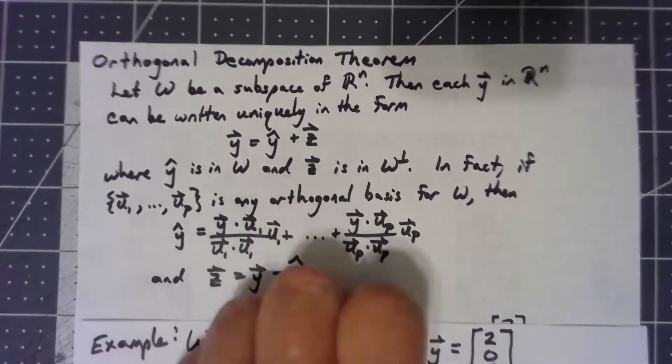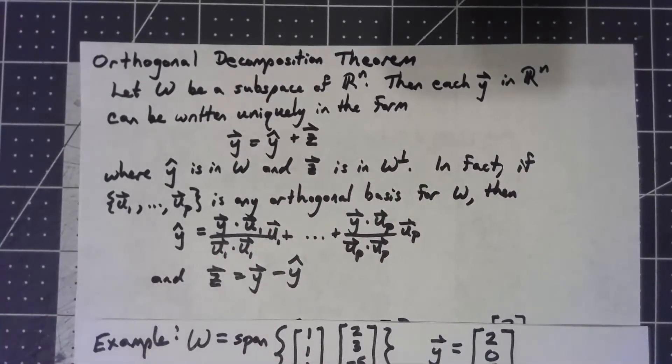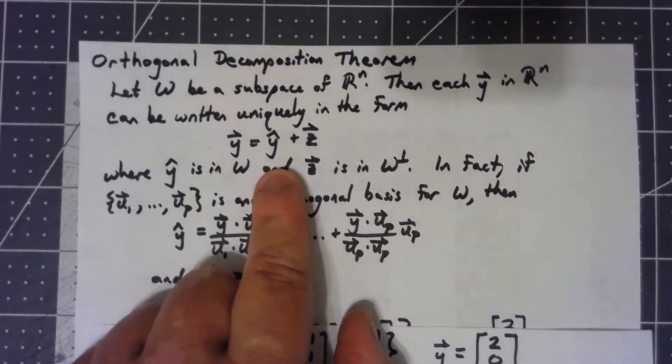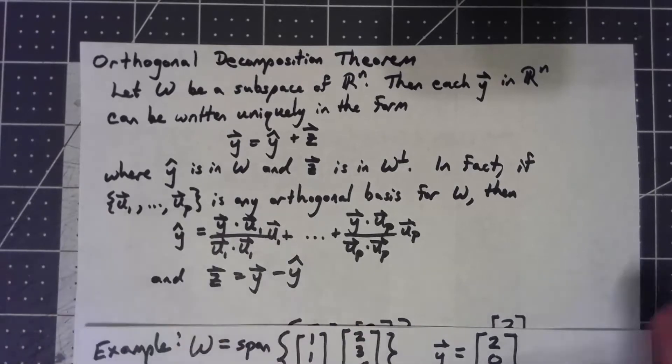In fact, if we have an orthogonal basis, orthonormal basis makes it easier, but it works for any orthogonal basis, we can find that projection onto the subspace, the y-hat, by doing exactly what we did for projecting onto a vector, just for each of those different basis vectors, and adding them up.